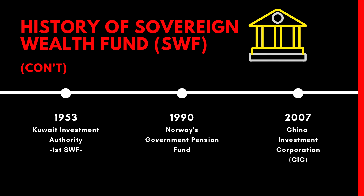The history of the Sovereign Wealth Fund begins in 1953 with the Kuwait Investment Authority as the first such fund. After that, many others followed, including in 1990 the Norway Government Pension Fund as a major fund, and in 2007 the establishment of the China Investment Corporation.